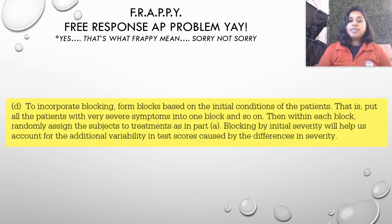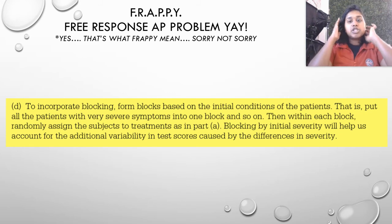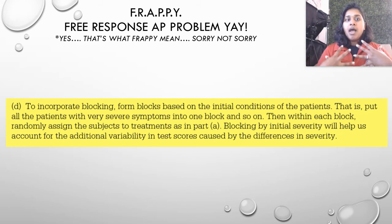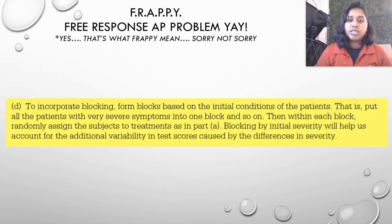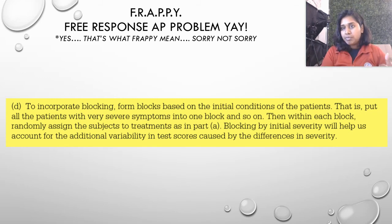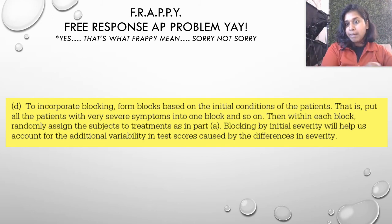Blocking by initial severity will help us account for the additional variability in test scores caused by differences in severity. Some students might ask why not block by treatment — remember, blocking has to do with a categorization of the population itself, not the treatments, because treatments are an entirely different step in your experimental design. Blocking is about something that describes the population — whether you're blocking by gender, GPA, favorite color, or whatever it is.